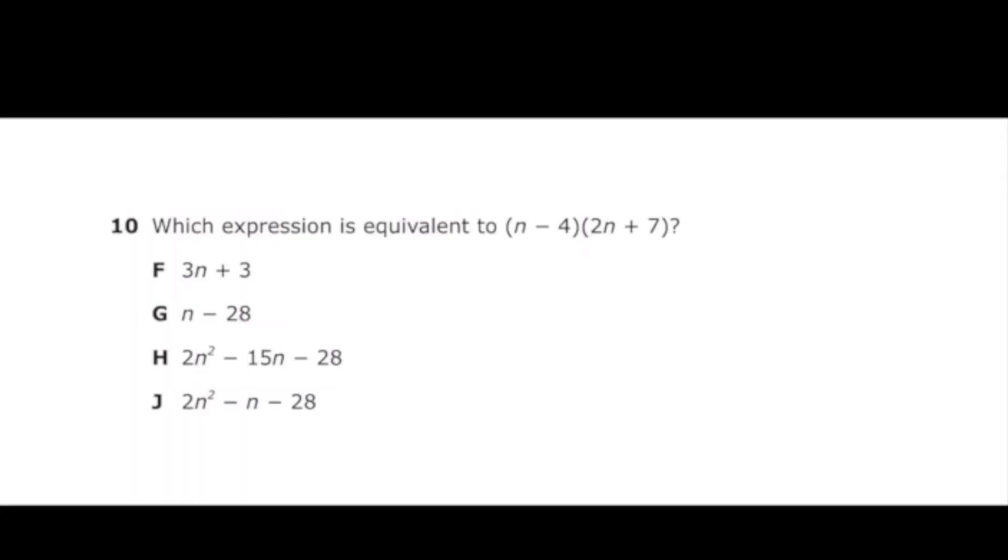Number 10 from the 2022 Algebra 1 EOC: which expression is equivalent to (n - 4)(2n + 7)? So I'm going to use the FOIL method. I'm going to start by multiplying n times 2n, which is 2n squared. Then I'm going to multiply n times 7, which is positive 7n. Then I'm going to multiply negative 4 times 2n, which is negative 8n. And then negative 4 times positive 7, which is negative 28.